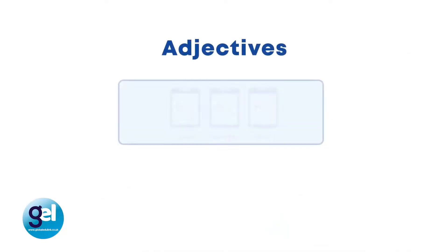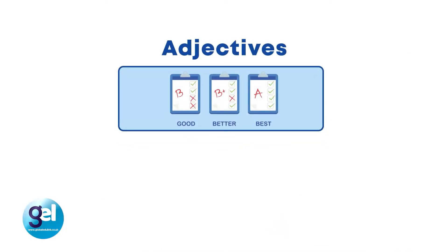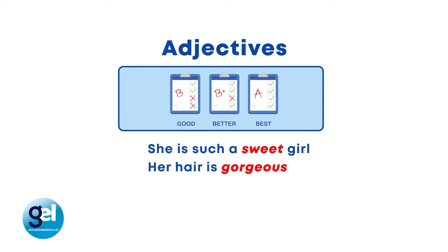Let's have a look at adjectives. So what is an adjective? An adjective is a describing word and we use these to modify the noun. Let's have a look. She is such a sweet girl — so sweet is our adjective. Her hair is gorgeous — so gorgeous is our adjective. The film was amazing — amazing is our adjective.